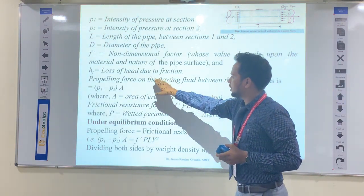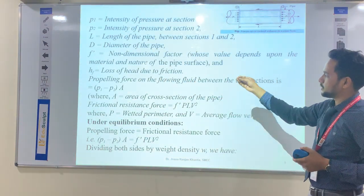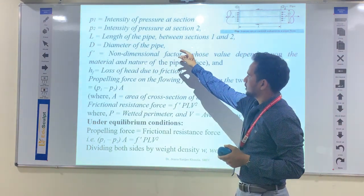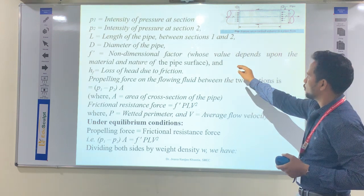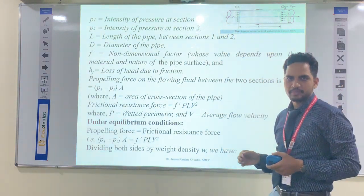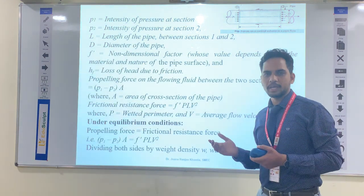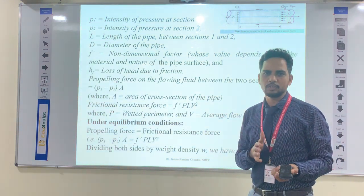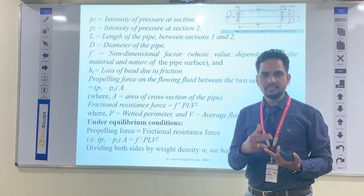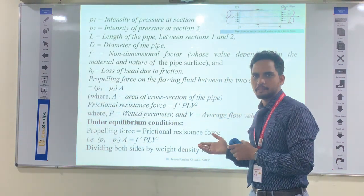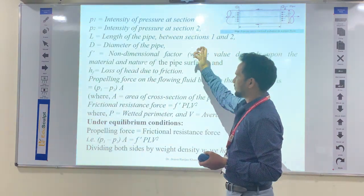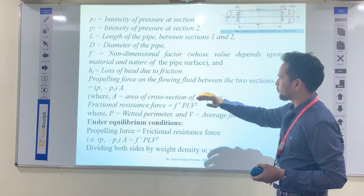HF is the head loss due to friction, which we need to find. F-dash is a non-dimensional factor whose value depends upon the material and nature of the pipe — for example, mild steel, plastic, or PVC — so as per that material the value will be different.